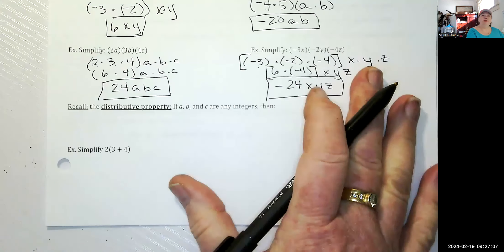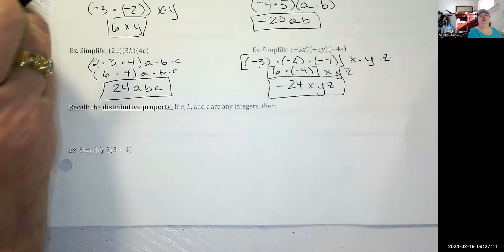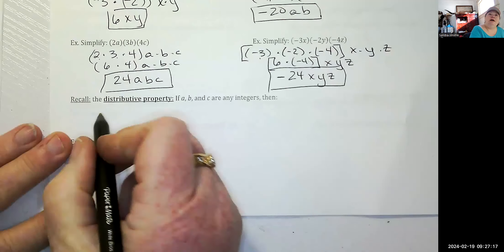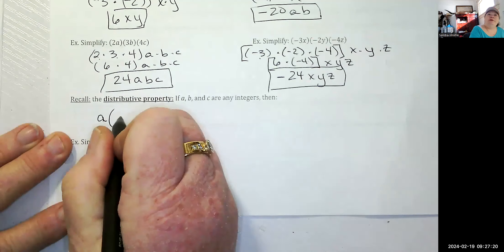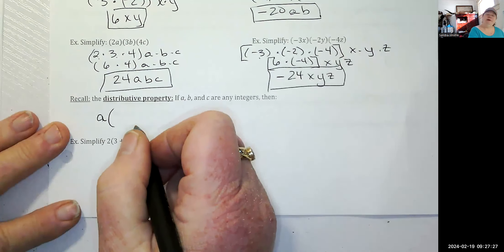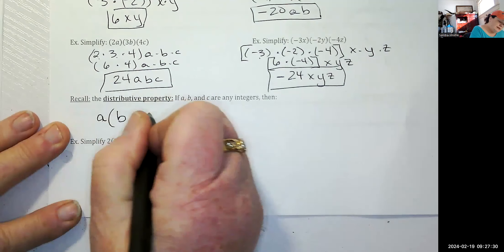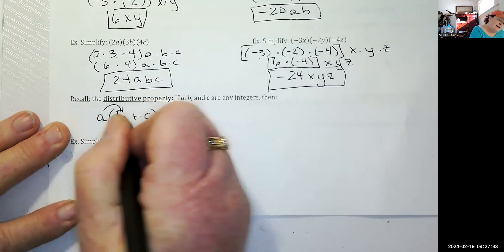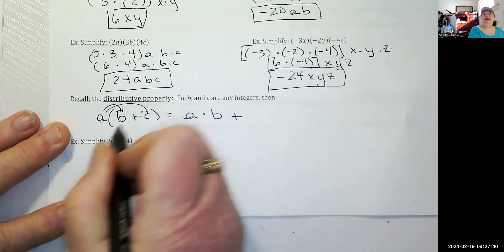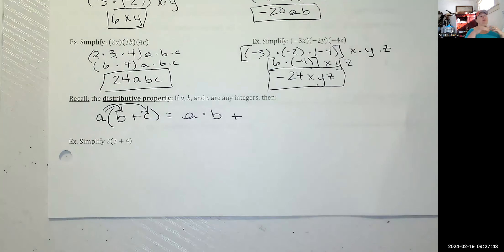Now we're going to introduce the distributive property, which we've talked about before. The distributive property means you have a number on the outside of a parenthesis, and inside you have two integers combined by addition or subtraction. So A times the quantity B plus C equals A times B plus A times C. Get a good hold on this now, because even college algebra students struggle with it — a weak foundation will cause problems later in your math career.